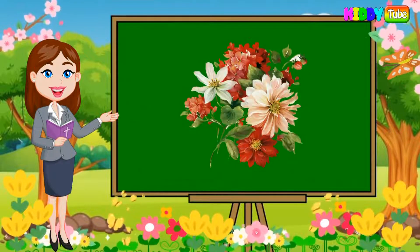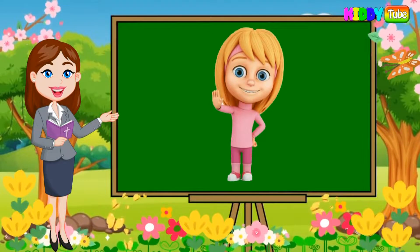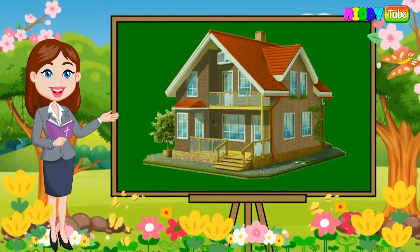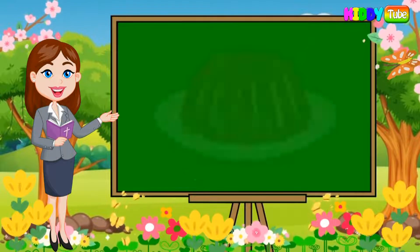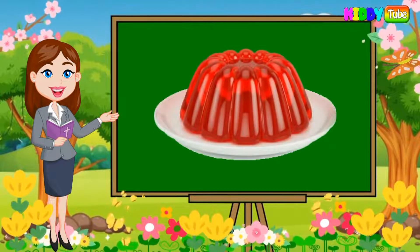F is for flowers. G is for girl. H is for house. I is for injection. J is for jelly.